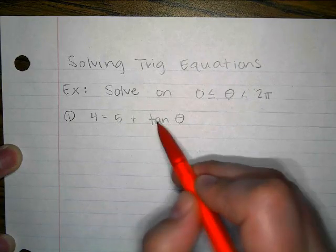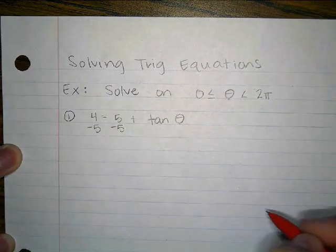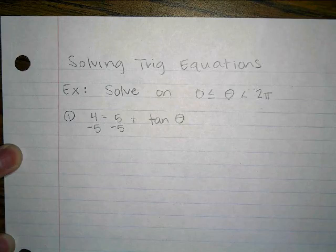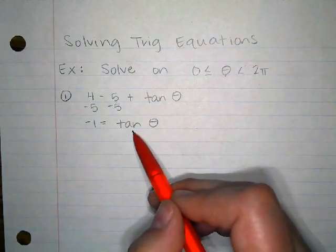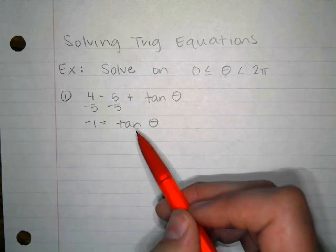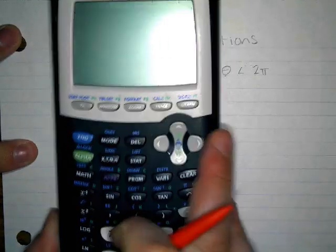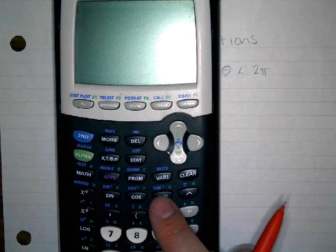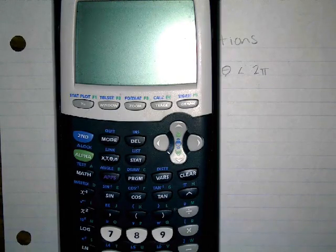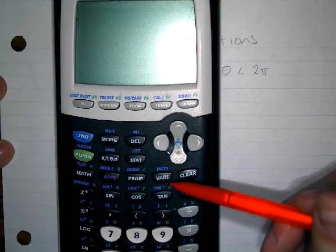Before I take the tan away, I'm going to subtract the 5 from both sides. So 4 take away 5 is negative 1, so negative 1 equals tan theta. Then to get the tan away from the theta, I have to undo the tan. Does anyone remember from Math 2 how we undo a tan? If you look above the tan button, you see tan inverse. The opposite of plus is minus, the opposite of multiply is divide, the opposite of squaring is square rooting — and so the opposite of tan is tan inverse. That's how you undo a tan.